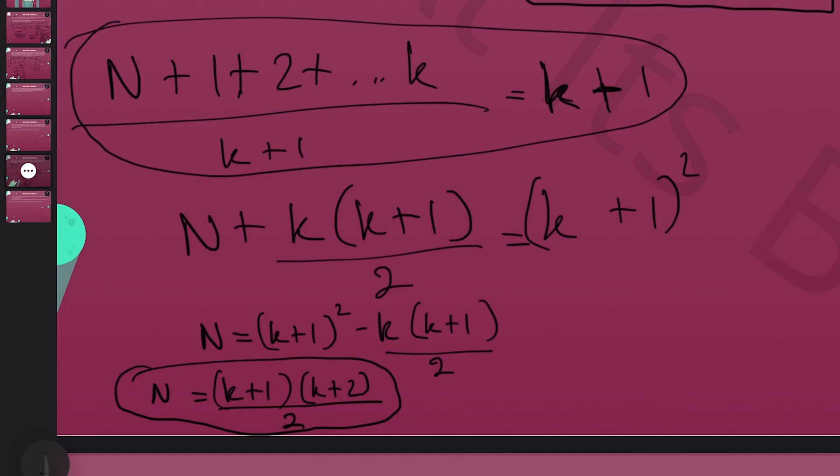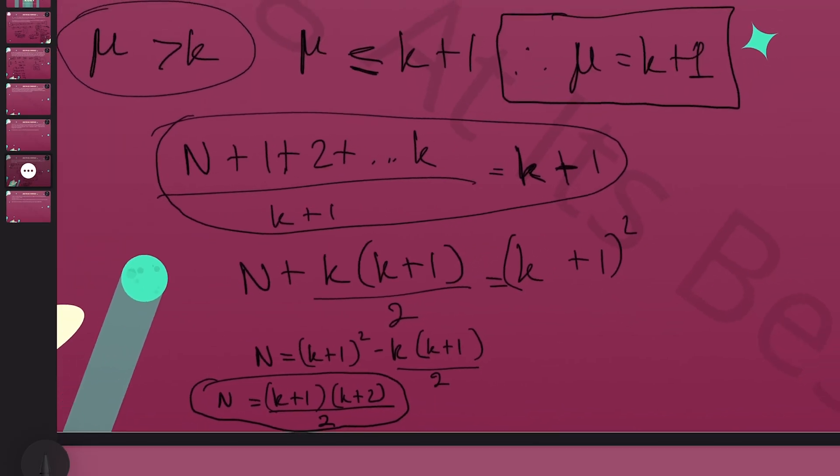The mean of the set that just contains one is one, which is definitely minimal and an integer, so we're fine, which means one does work. What we have left to do is count how many triangular numbers we have.